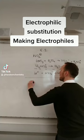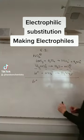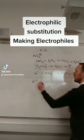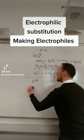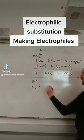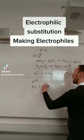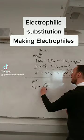Next one — you need to make the bromonium ion, Br⁺. How do you do that? Well, you take bromine and react it with a halogen carrier. You can use either iron, FeBr₃, or AlBr₃.